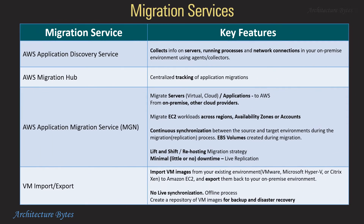Migration services: AWS Application Discovery Service collects information on servers, running processes, and network connections in your on-premise environment using agents, collectors, etc. AWS Migration Hub is a tracking service that provides centralized tracking of application migrations.